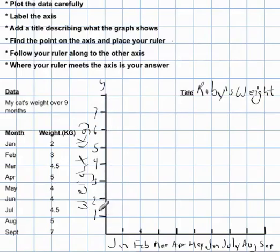So we've got our axes labeled. This is the x-axis, and now we can start plotting our data. January, Ruby was two kilograms, so there's January, and there's where two kilograms is, so we can put a little dot. And February, he was three kilograms, so there's February, we go up to three kilograms, and we put a dot.